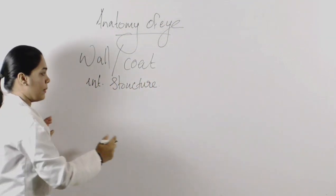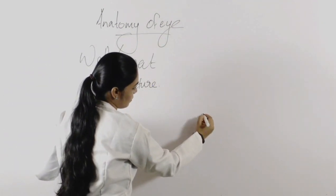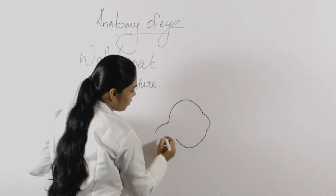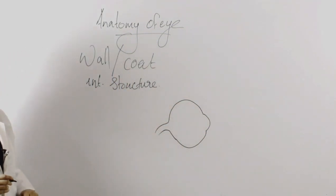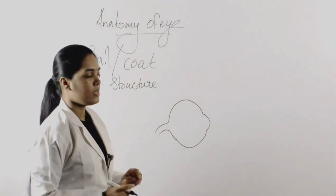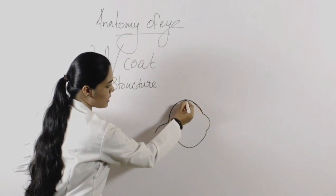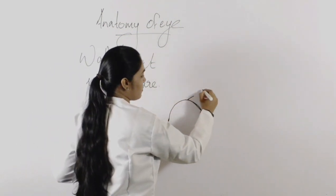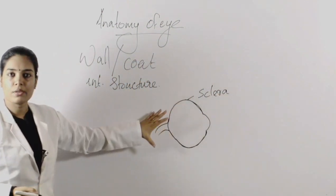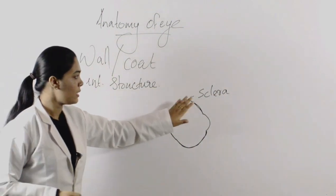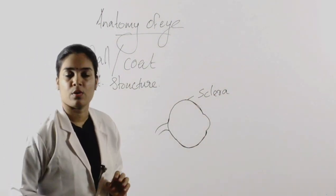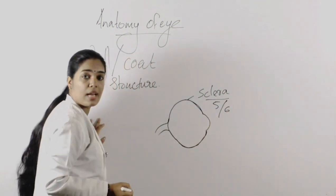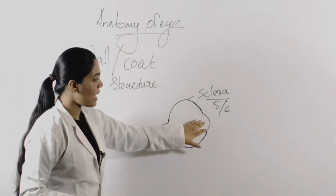I am drawing the outermost coat or the protective coat of the eye. This is the outermost coat of the eye and it is known as sclera. The posterior 5/6 area is known as sclera. It is the protective layer of the eye — the outermost layer — and it is an opaque, very tough membrane.